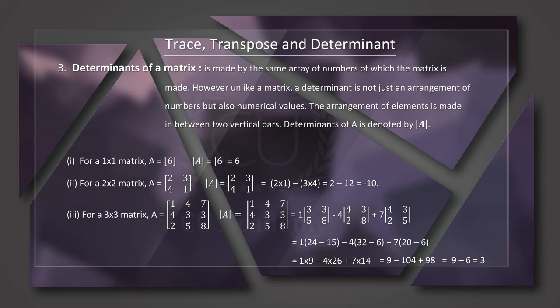Now for a 3 by 3 matrix. The matrix is equal to [1, 4, 7; 4, 3, 2; 3, 5, 8]. That is a 3 by 3 matrix. The determinant is |1, 4, 7; 4, 3, 2; 3, 5, 8|. We find the unique value by expanding along the first row with elements 1, 4, 7.